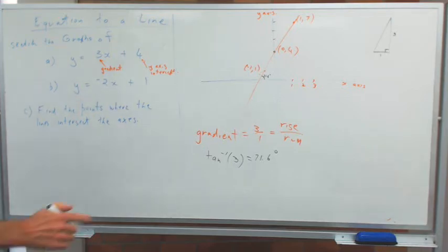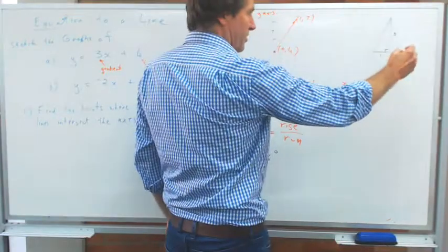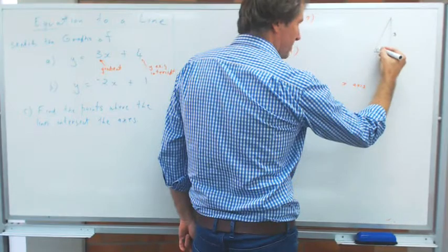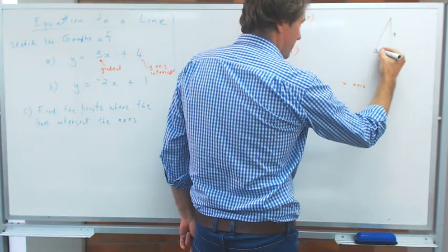So why is it 71 degrees? Well, if you think of a triangle, the ratio of 3 is to 1, the rise is 3, the run is 1. That angle in there is 71 degrees.